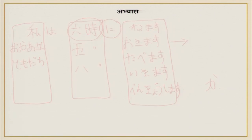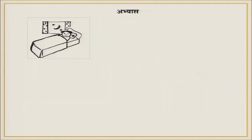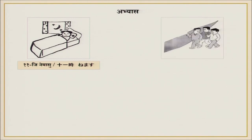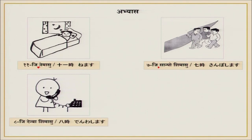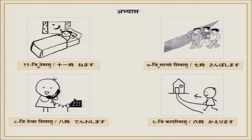Now here is a practice exercise with pictures. The person is sleeping — 'Juuji ni nemasu.' You can say: 'Watashi wa juuji ni nemasu' or 'Tomodachi wa juuji ni nemasu.' These people are walking — 'Shichi ji ni sanpo shimasu.' Remember: ni comes after the time. This person is on the phone — 'Okasan ni hachiji ni denwa shimasu.' And here: 'Rokuji ni kaerimasu.'